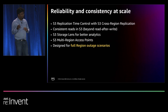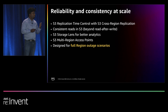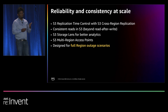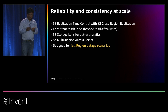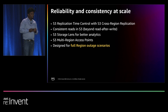On the topic of reliability and consistency at scale, we use a lot of S3 features, including replication time control with cross-region replication. We have started using consistent reads in S3 — this went beyond read-after-write, and is one of the close collaborations we've worked on with the S3 team. We also use S3 Storage Lens for analytics across our huge data lake, and we've started using S3 multi-region access points to get cross-region reliability. Our system is designed for full region outage scenarios to make sure our business continues to operate.